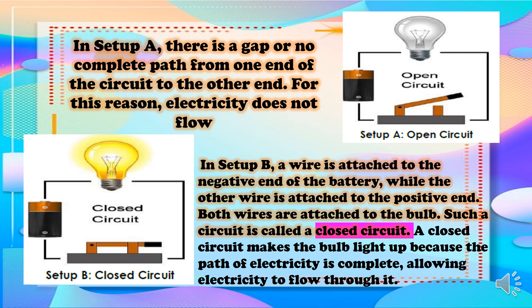Such a circuit is called a closed circuit. A closed circuit makes the bulb light up because the path of electricity is complete, allowing electricity to flow through it.